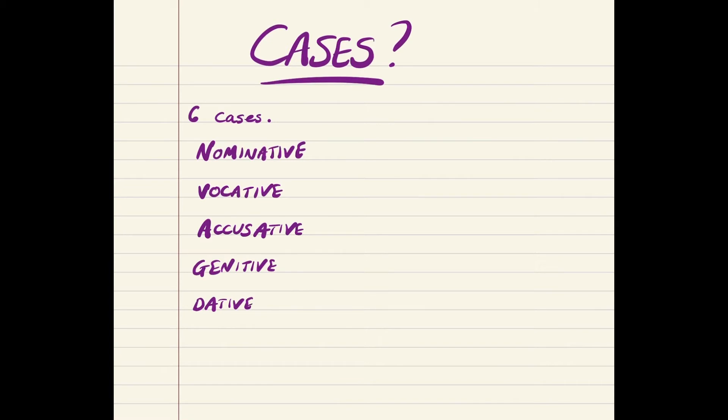So when you learn a noun table, you will learn them in this order if you are based in the UK, I should say. If you are based in America or you follow an American grammar book, then you will have the genitive straight after the nominative. Don't worry about that right now. Learn whichever pattern you have. So, you have nominative, vocative, accusative, genitive, dative, and ablative.